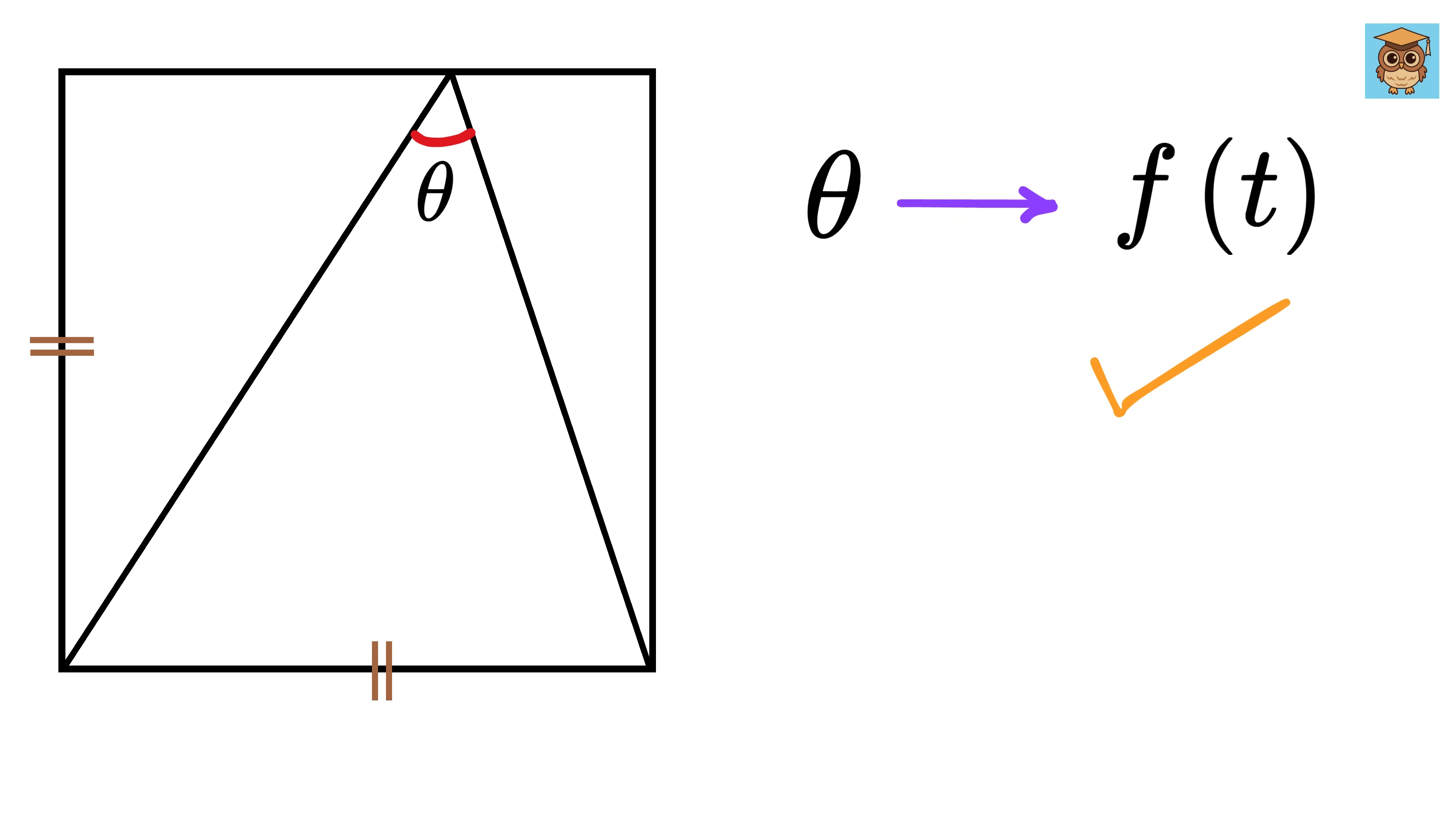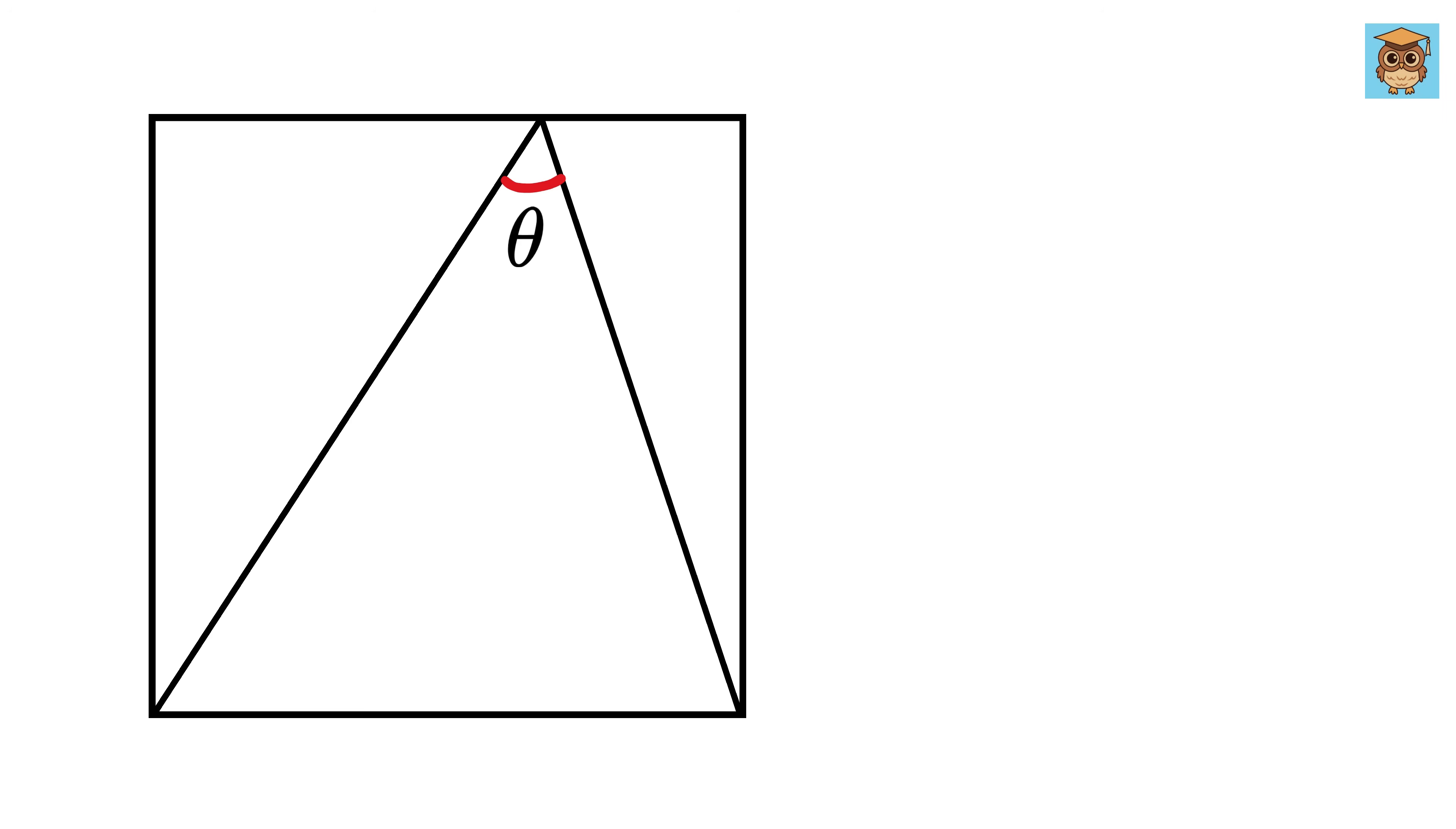So let us create that function. We don't know the side length of this square, so let us label it as x, so all of them will also be equal to x as well. Now let this piece be of length c, and since this is x, thus this piece will be of length x minus c.